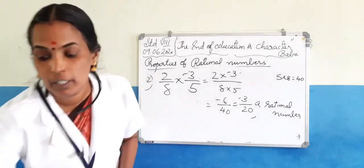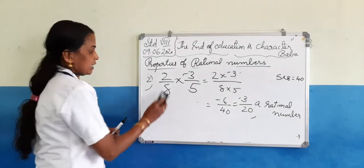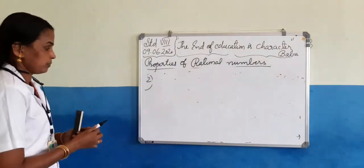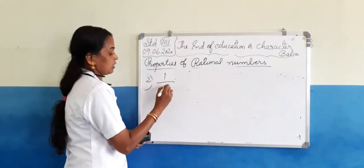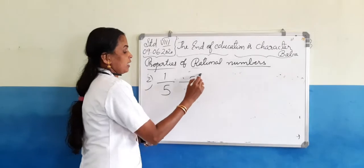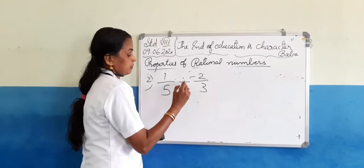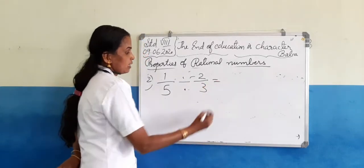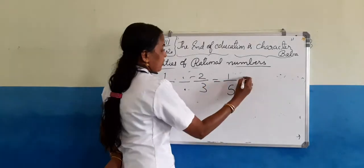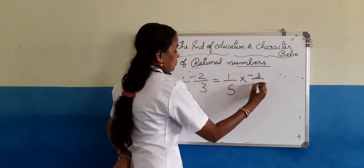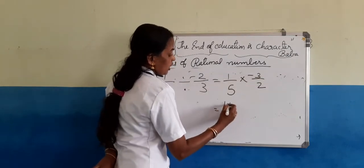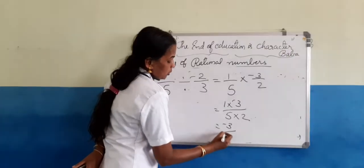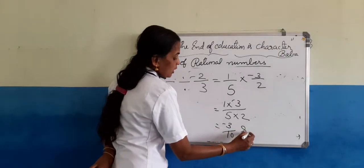Next we check division of rational numbers. Take rational number 1 by 5 divided by negative 2 by 3. For division we take the reciprocal of the divisor, so we get 1 by 5 into negative 3 by 2, which equals 1 into negative 3 by 5 into 2, simplified to negative 3 by 10. This is also a rational number.